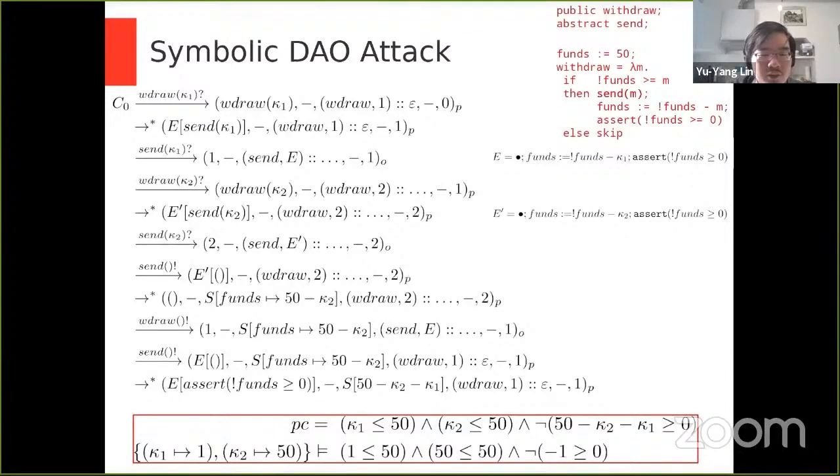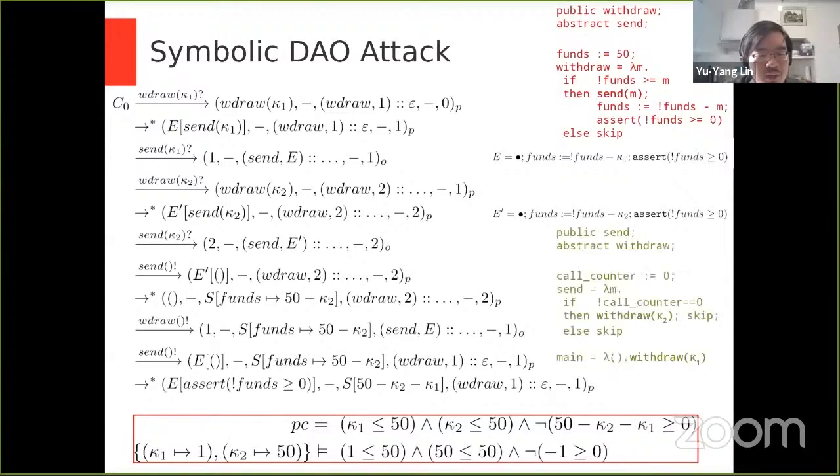And we want to know if the negation of this assertion is reachable. We thus conjoin the PC with the negation of the assertion. We then can see that the formula is satisfiable with a SAT solver. If we feed the values one as the first call for kappa one, and then we feed 50 for kappa two, so the re-entrant call is 50, we can show that the formula is satisfiable, which means that the negation of the assertion is reachable. So we can violate the assertion. Again, by definability, we have the green client defined here, which concretely defines this error trace.